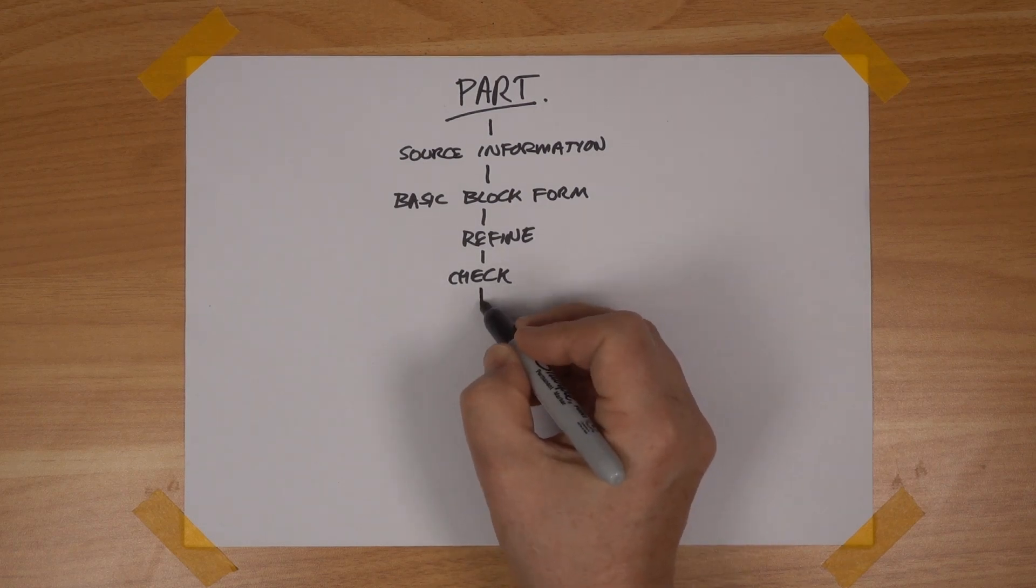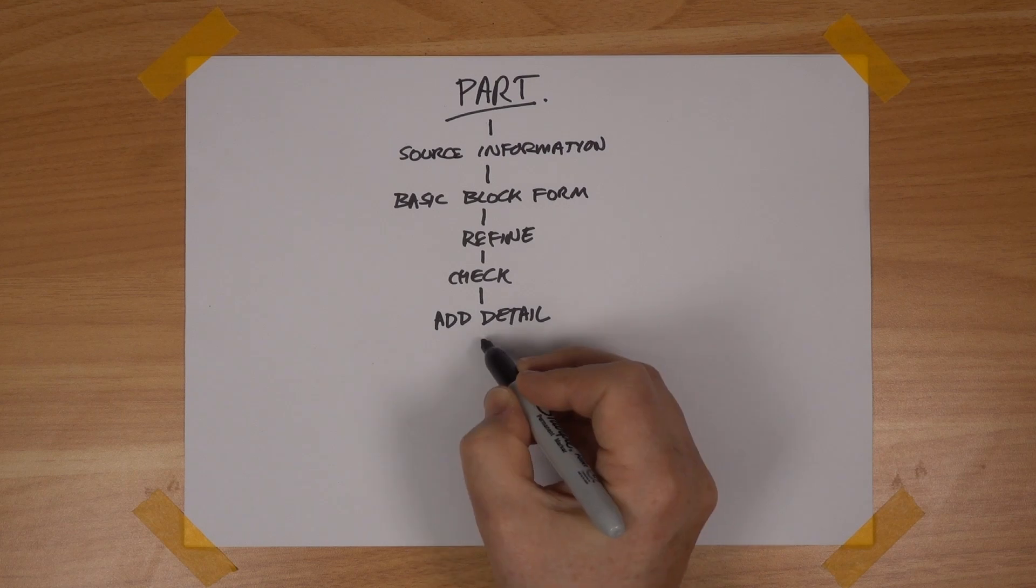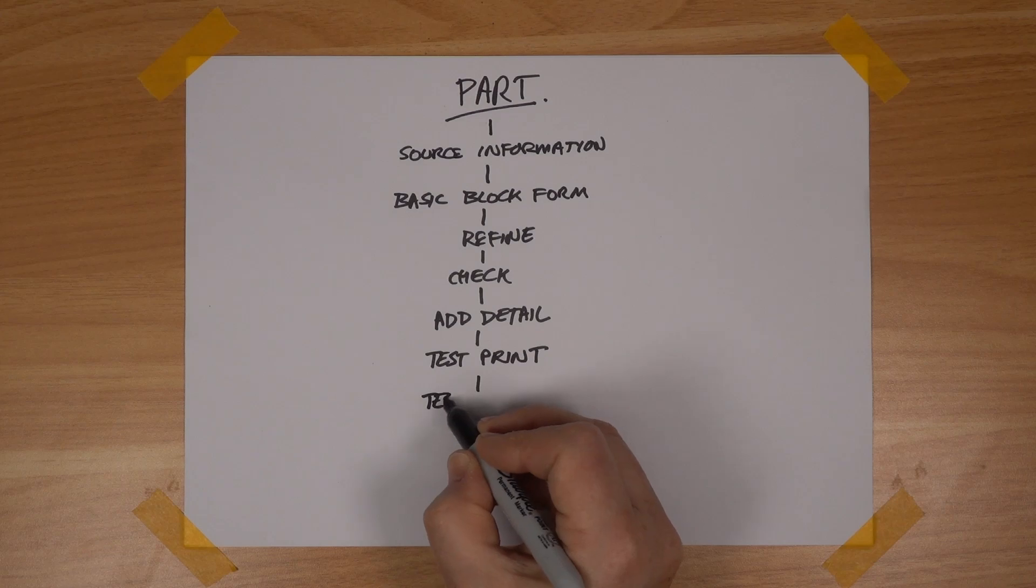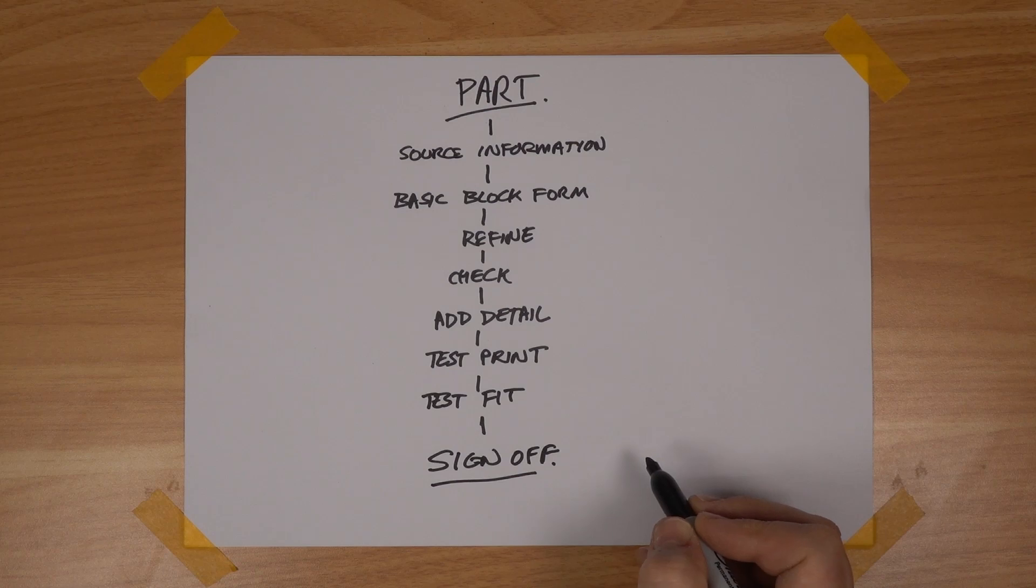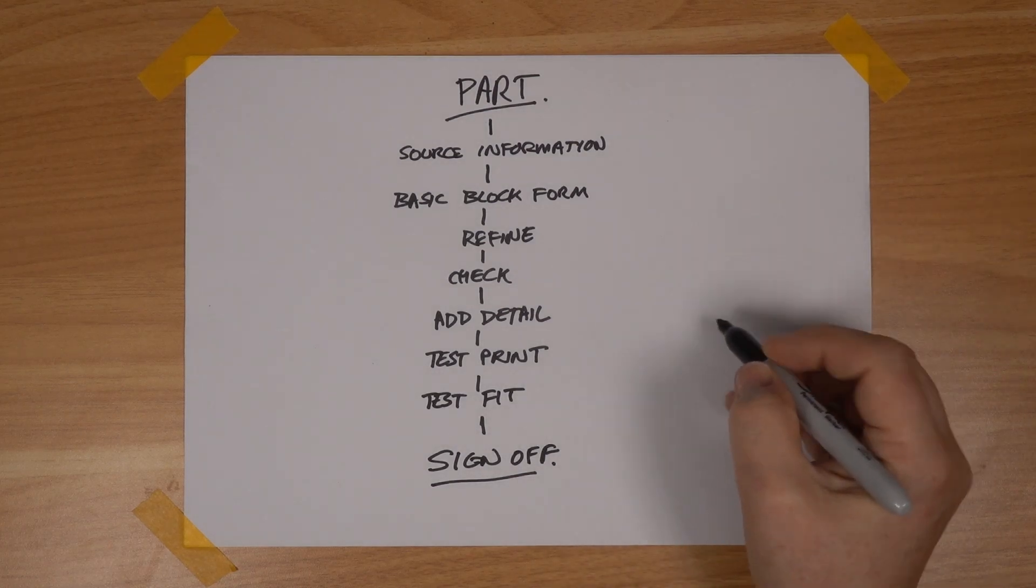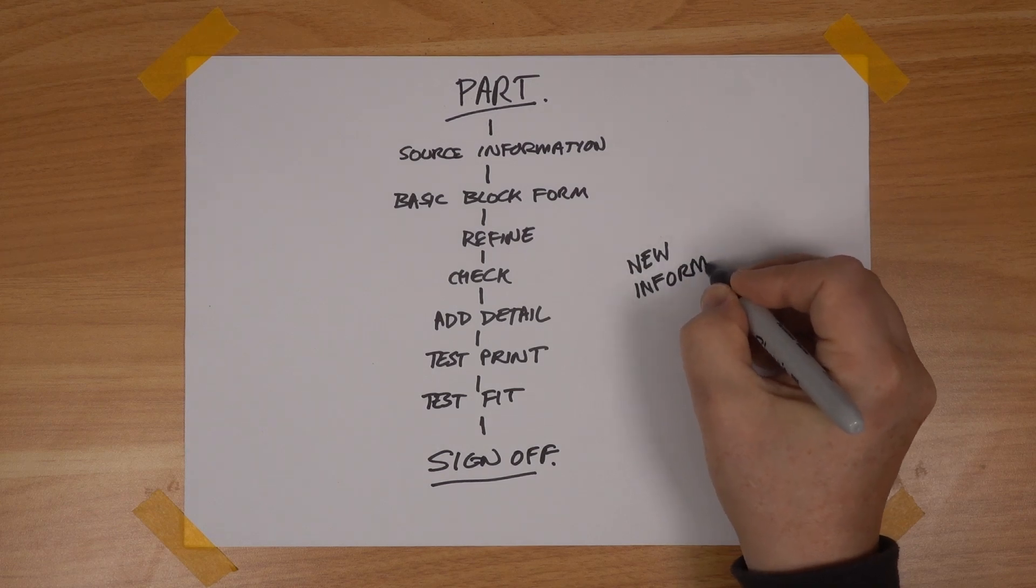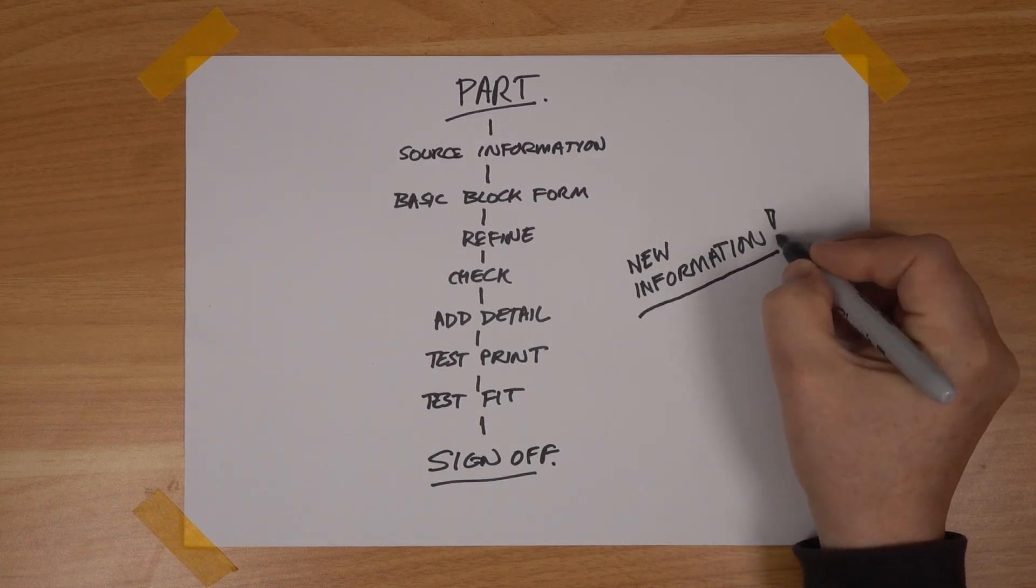Frequently referring back to the source information, checking the part still looks correct. Then I add the finer details. In some instances I have to get a bit creative and use my imagination to fill in the gaps, but that's a last resort. Then it's on to test printing and test fitting the parts together before they can be signed off. Of course at any stage new information can crop up. Often part of a single frame can have just the right angle to change how you see a part and then it has to be updated.